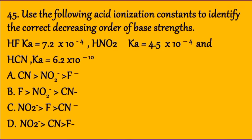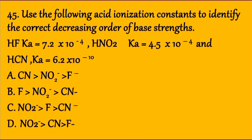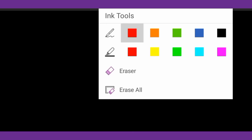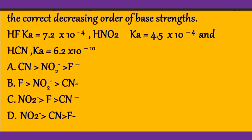Question 45: Use the following acid ionization constants to identify the correct decreasing order of base strengths. Given: hydrofluoric acid Ka = 7.2 × 10⁻⁴, nitrous acid Ka = 4.5 × 10⁻⁴, hydrocyanic acid Ka = 6.2 × 10⁻¹⁰. Use the conjugate base strengths in decreasing order from highest to lowest.